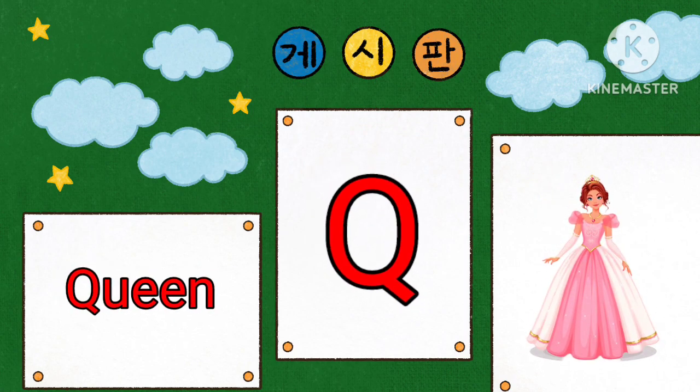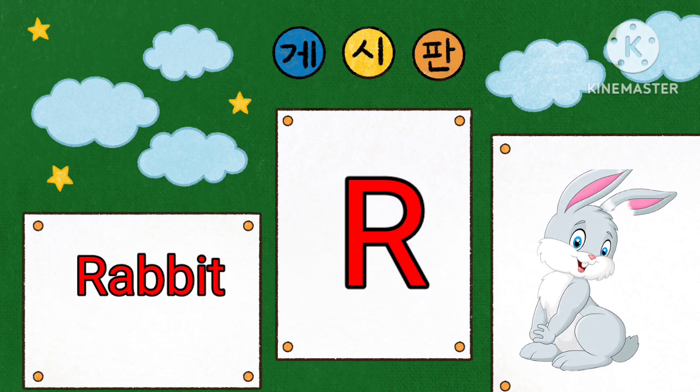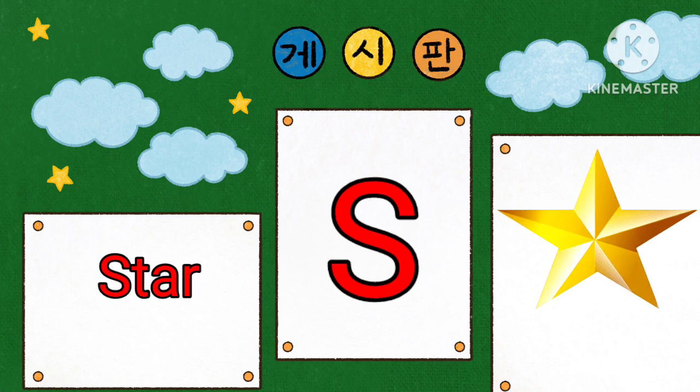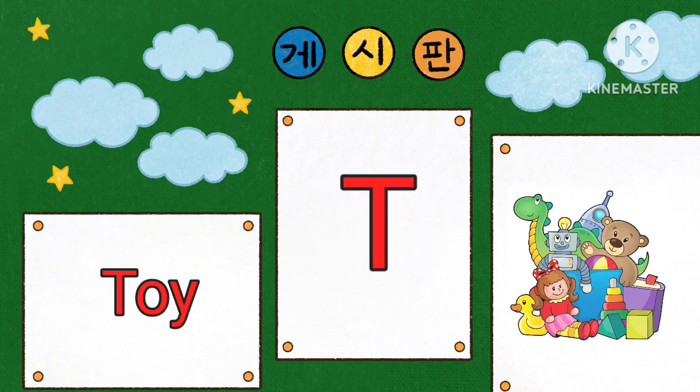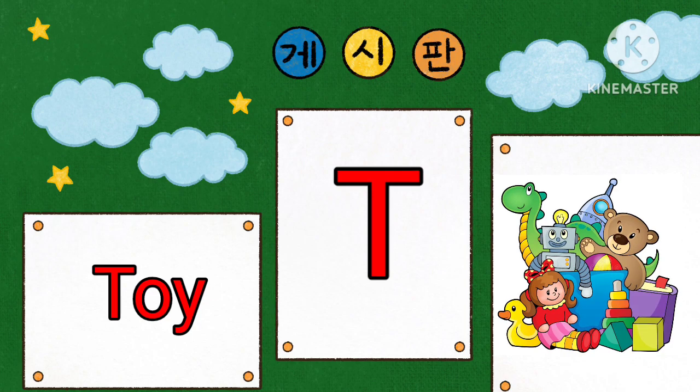Q is for Queen. R is for Rabbit. S is for Star. T is for Twine.